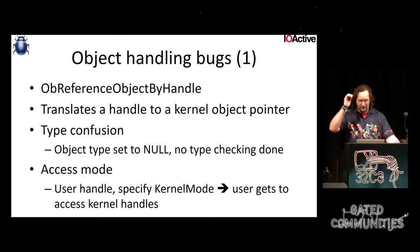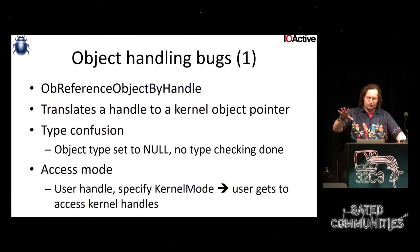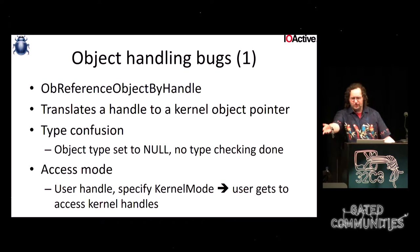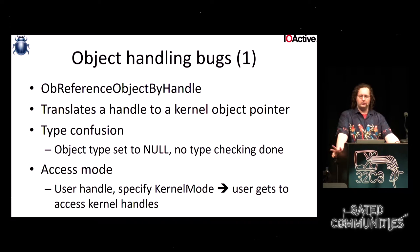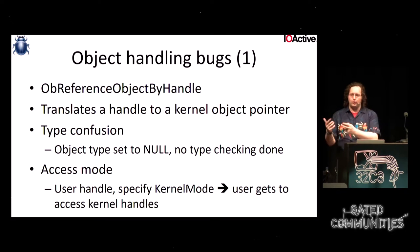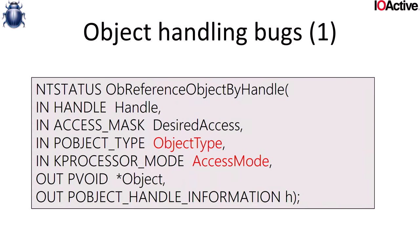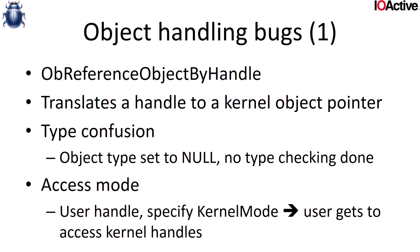The fifth area is object handling. When user land passes a handle to a kernel object — say a file handle — and says 'go do something with it,' the kernel must translate that handle to a kernel pointer. You call ObReferenceObjectByHandle, which translates the handle. The API has an ObjectType parameter — it enforces that the handle is of a particular type — and an AccessMode parameter.